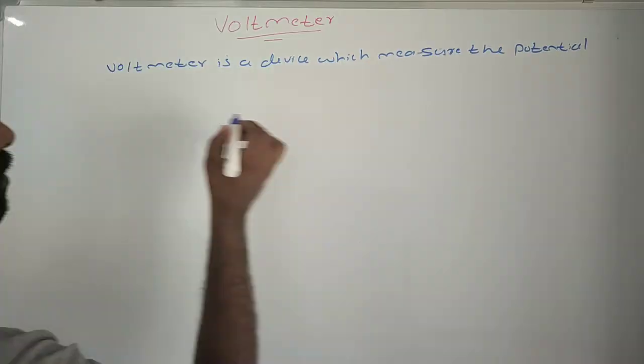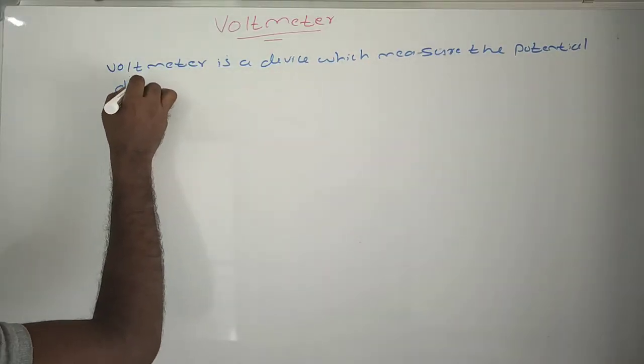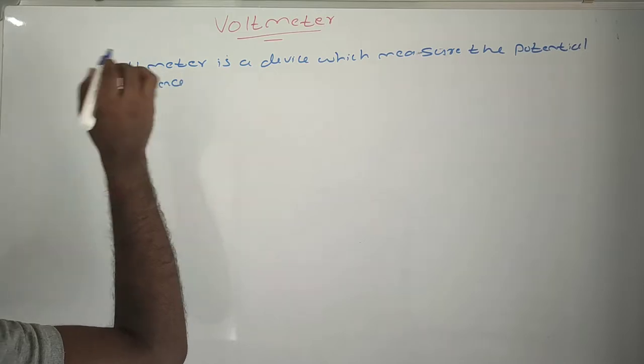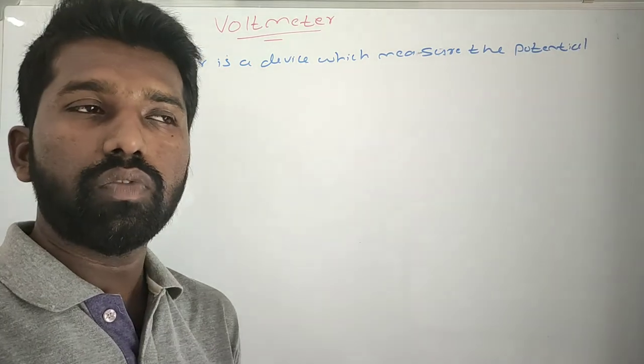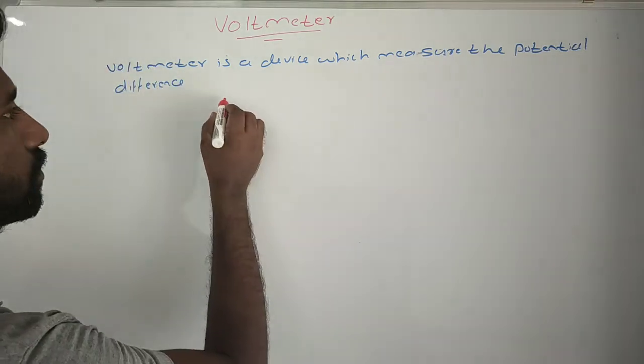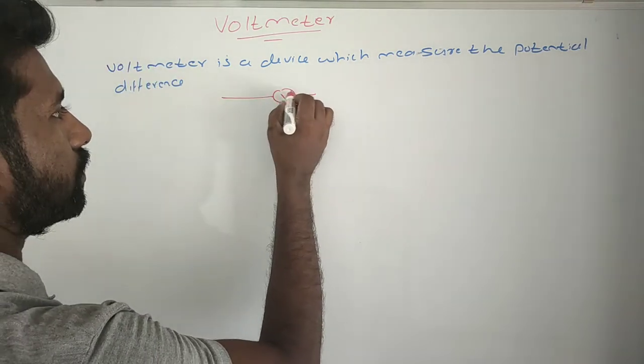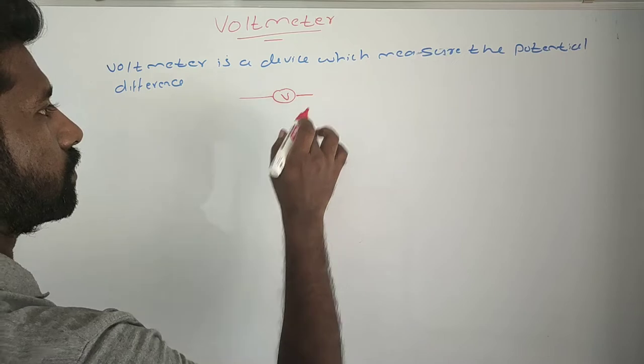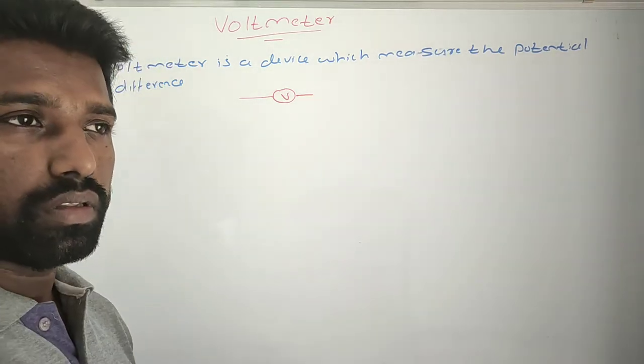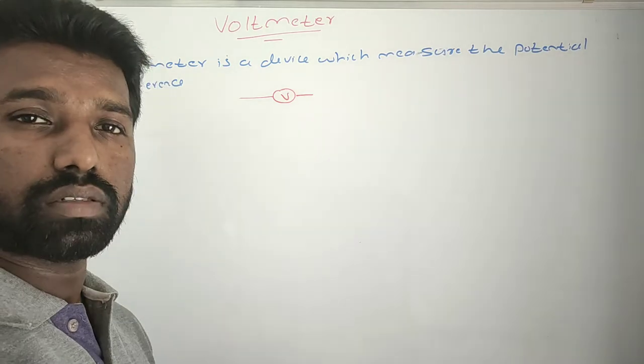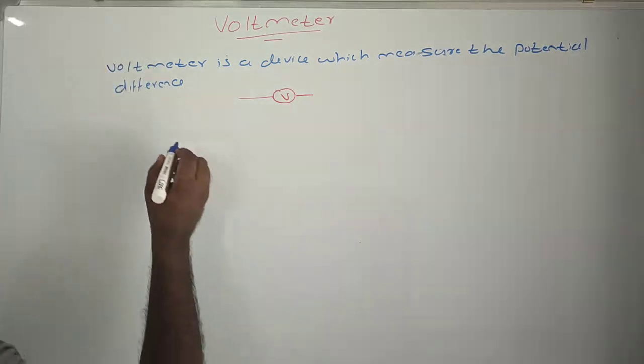And what is the symbol for the voltmeter? The voltmeter symbol is like this: V. And how is this voltmeter to be connected in a circuit? This voltmeter is always connected parallel to a circuit.